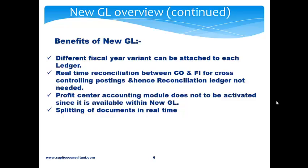Real-time reconciliation between CO and FI for cross-controlling postings, and hence the reconciliation ledger is not needed. Profit center accounting module does not need to be activated since it is available within New GL. Splitting of documents happens in real-time.